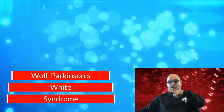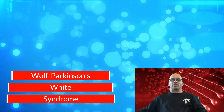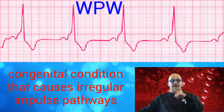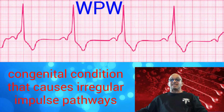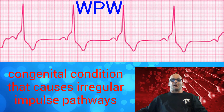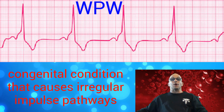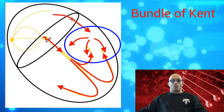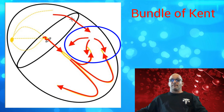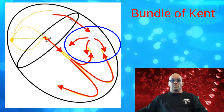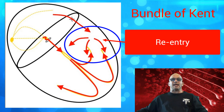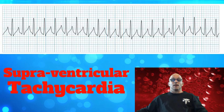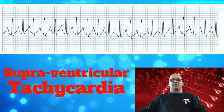Next, we shall discuss Wolff-Parkinson-White syndrome. It is a congenital condition that causes irregular impulse pathways known as the bundle of Kent. These impulses have lost control and can move in either direction, firing upward or downward. This causes what is known as re-entry, which can lead to supraventricular tachycardia in which there are no discernible P waves.